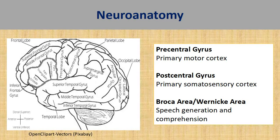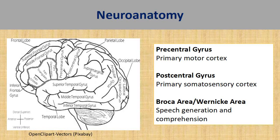There are many specialized areas in the brain with different functions. For this lecture, I'll highlight four important areas. The first is the precentral gyrus, which is your primary motor cortex — any involvement manifests as motor dysfunction. Behind it is the postcentral gyrus, your primary somatosensory cortex — any involvement manifests as somatosensory dysfunction. Lastly, the Broca's area and Wernicke's area are your speech centers situated in the temporal lobe — involvement may manifest as dysphasia or aphasia.